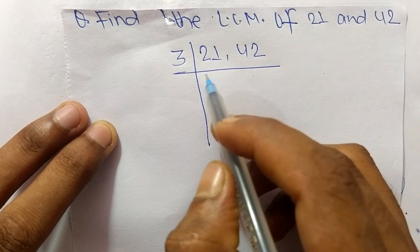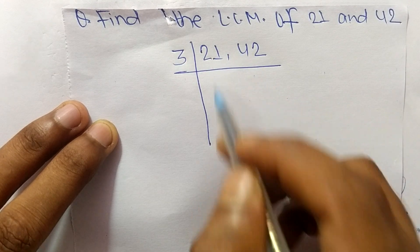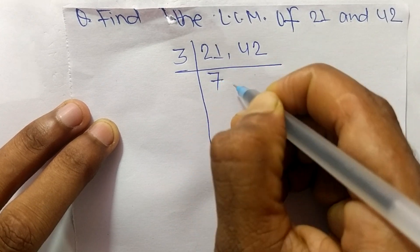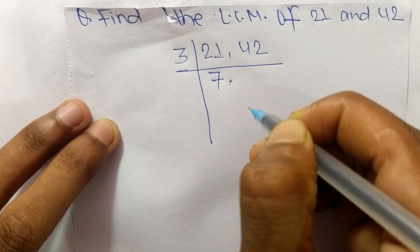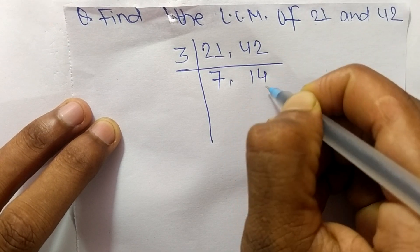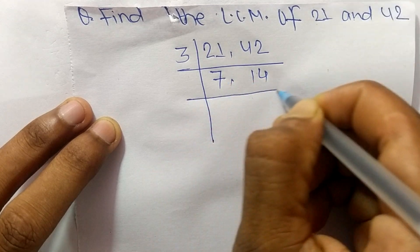And when we choose here the 2, the 2 can divide 42 but can't exactly divide 21, so we take here 3. So 3 times 7 means it is 21, and 3 times 14 means it is 42.